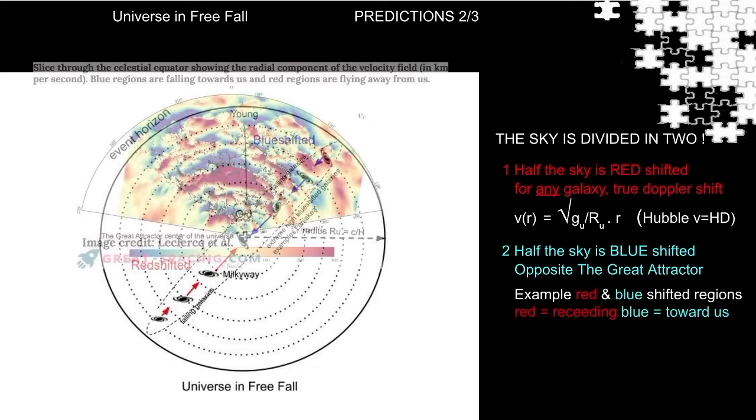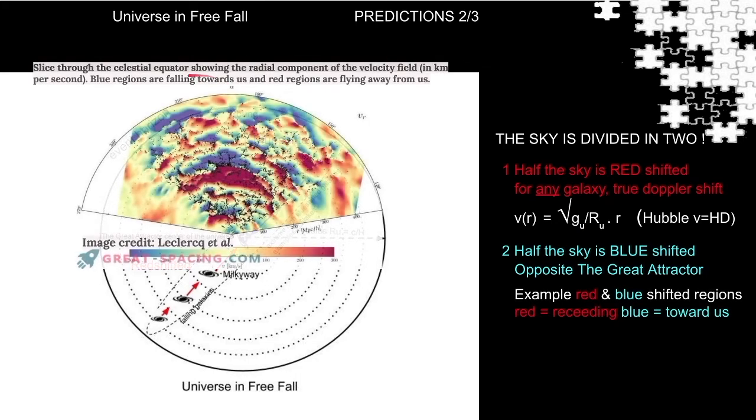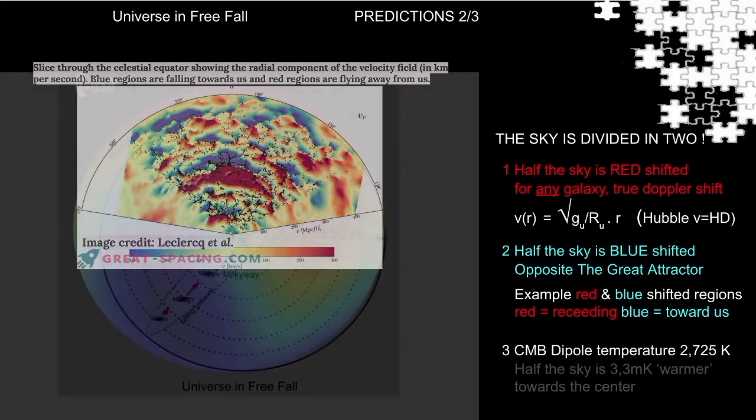Red and blue shifted regions have been observed, as seen here in the drawing. The raw and unfiltered CMB radiation is the so-called dipole. It divides the sky also in two halves.